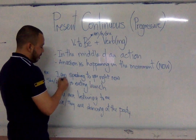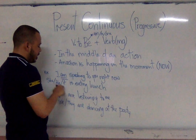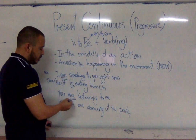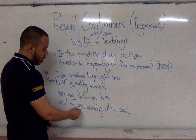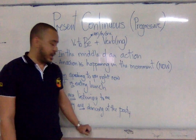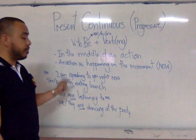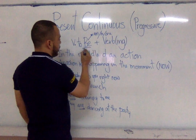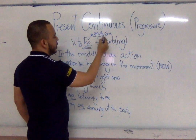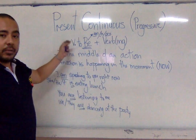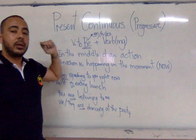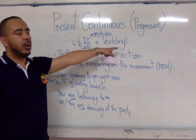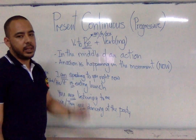I am. He, she, it is. You are. We, they are. As you can see, they all have the verb to be. Am, is, are — verb to be in present tense. Plus the verb with -ing. You add -ing to the verb. Let's see that part in the sentence.